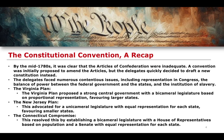There were numerous challenges, including representation in Congress, balance of power between the federal government and the states, as well as the institution of slavery. We also discussed the Connecticut Compromise, where there was a debate about adequate representation. Smaller states favoured equal representation, so they had just as much authority as the larger states and would not get overrun by them. Larger states, on the other hand, wanted representation based on population size so that they would have a greater impact and influence over policy.